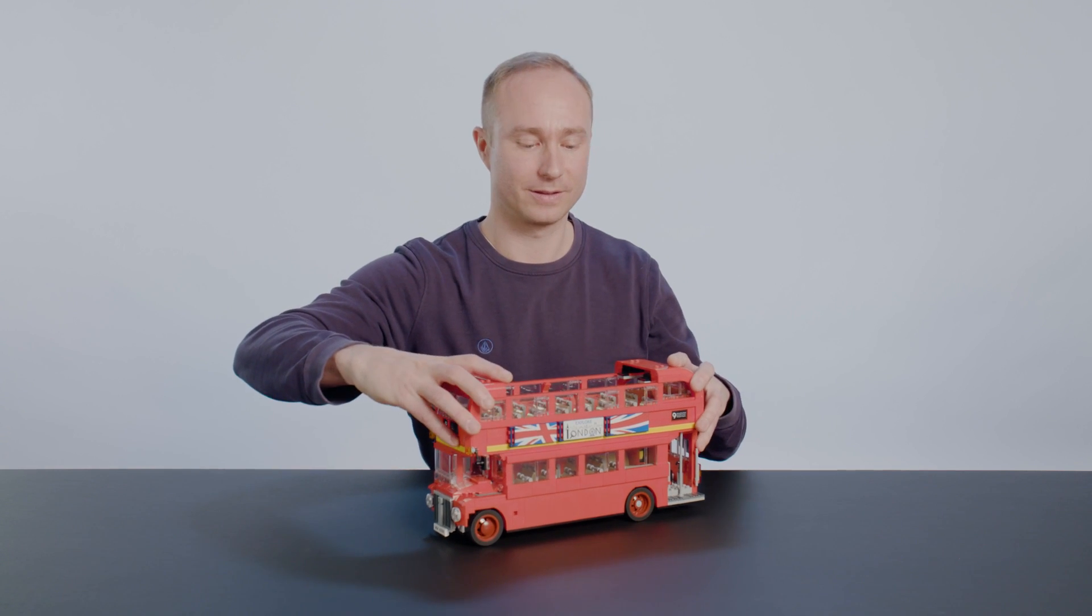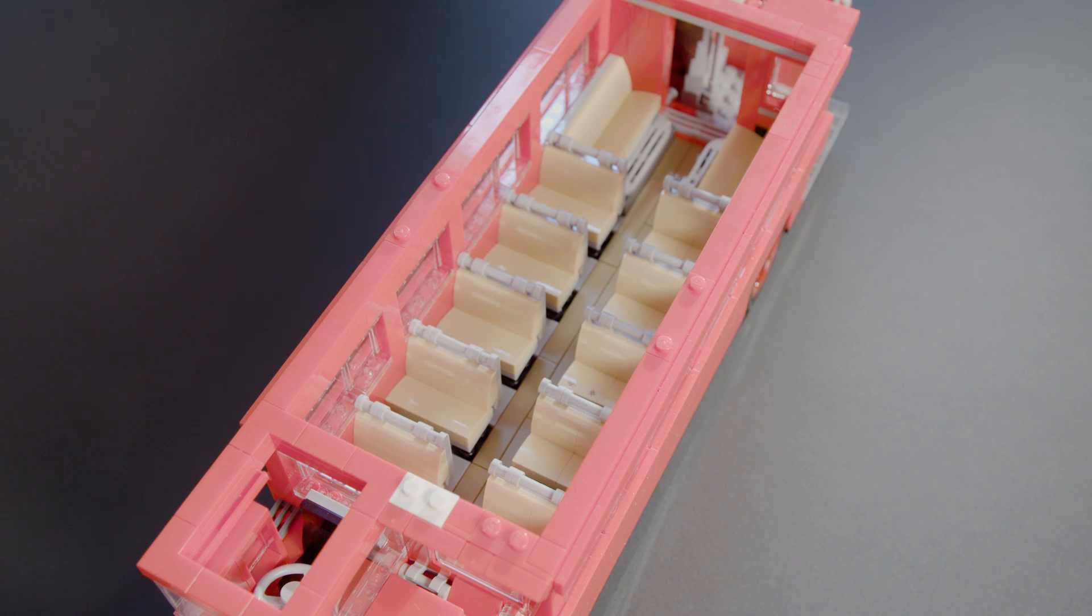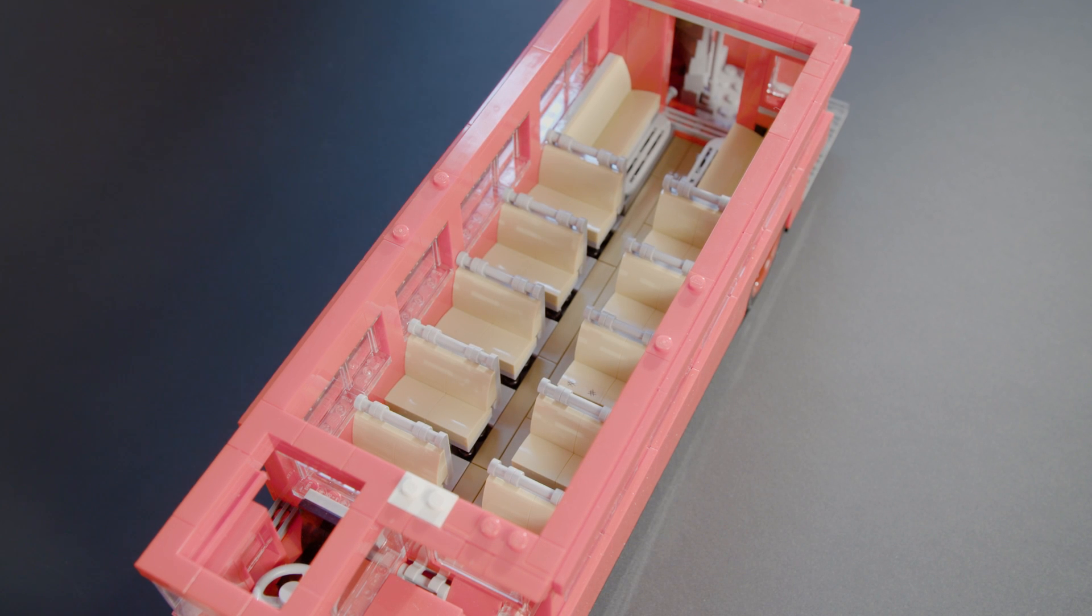So to see what's on the lower deck, we lift up the upper deck and then we can see there's a spiral staircase leading from the upper deck to the lower deck.